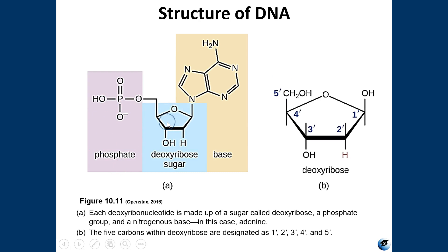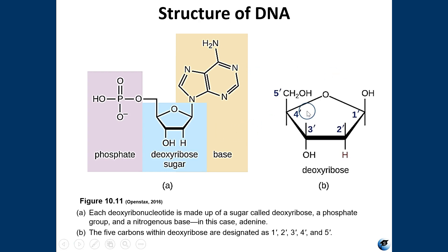The three components of a deoxyribonucleotide are a 5-carbon sugar — your deoxyribose sugar — a phosphate group, and one of your purines or pyrimidines. In this case, this is the purine adenine. In order to be called a deoxyribonucleotide, it has to have all three of those structures, and this is responsible for complementary base pairing between nucleic acid strands. The five carbons of deoxyribose are 1-prime, 2-prime, 3-prime, 4-prime, and 5-prime.